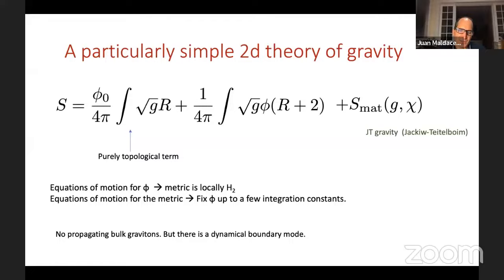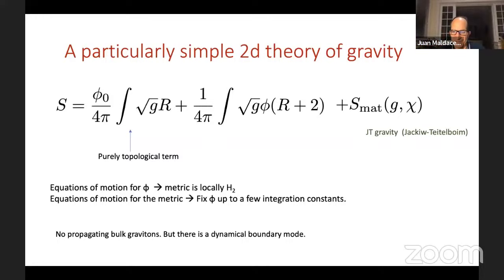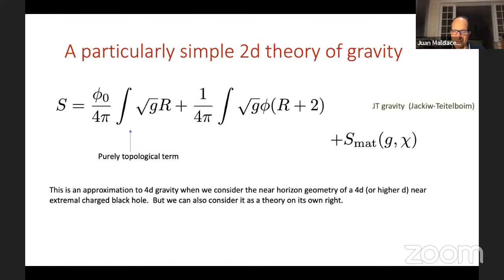This theory can be an approximation to 4D gravity when considering the near-horizon geometry of near-extremal charged black holes. In Euclidean signature we have Euclidean hyperbolic space — Euclidean AdS₂ gravity, or nearly AdS₂ gravity. We put a cutoff surface fixing the boundary value of the dilaton and the length of the boundary curve. If this arises from higher dimensions, that's the region where the near-horizon geometry matches into the higher-dimensional space.